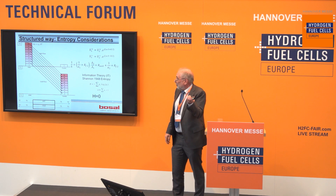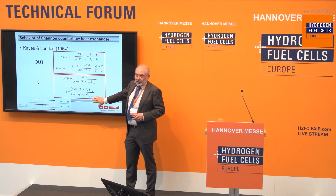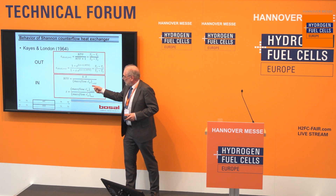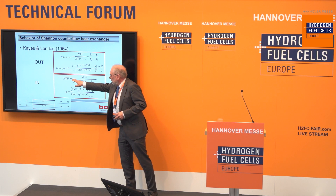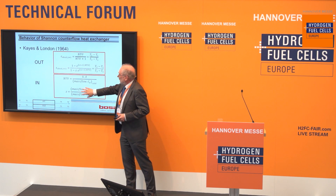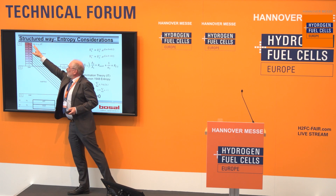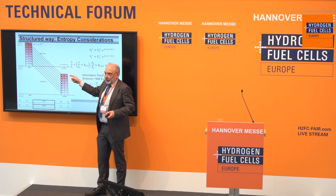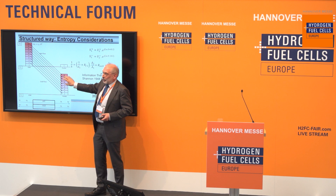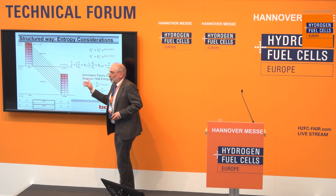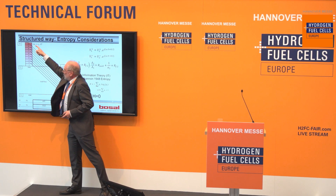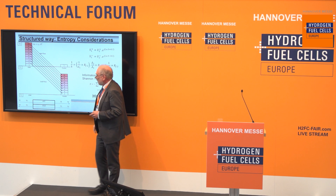In the 1964 Kays and London defined these formulas. We have Z, which is the ratio of the mass capacity, and NTU, which stands for number of transferred units, and then you can calculate the effectiveness. Z stands for what happens when a dQ travels: it changes the temperature, and if Z is one it will change the temperature equally; if Z is different, this temperature change will differ. NTU stands for number of transferred units — here we transferred nine units, so we have an effectiveness of 90 percent. That is in line with these formulas.